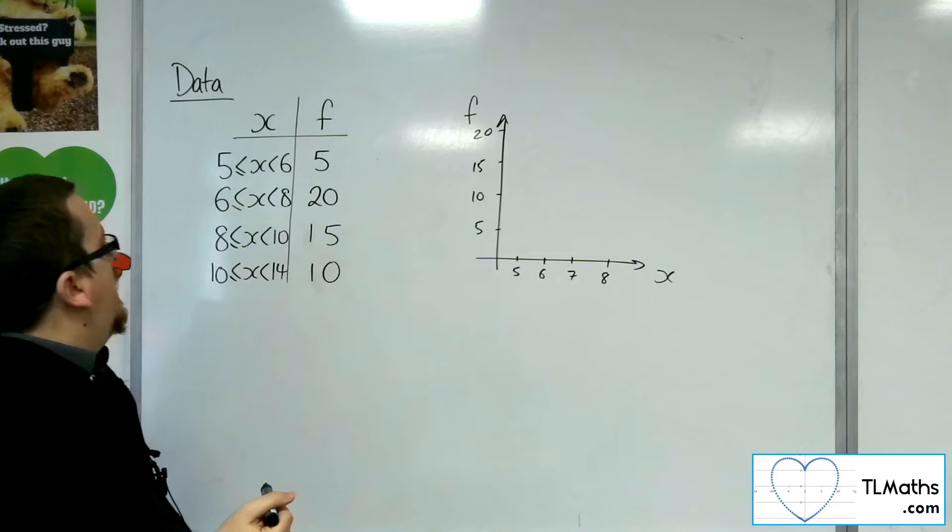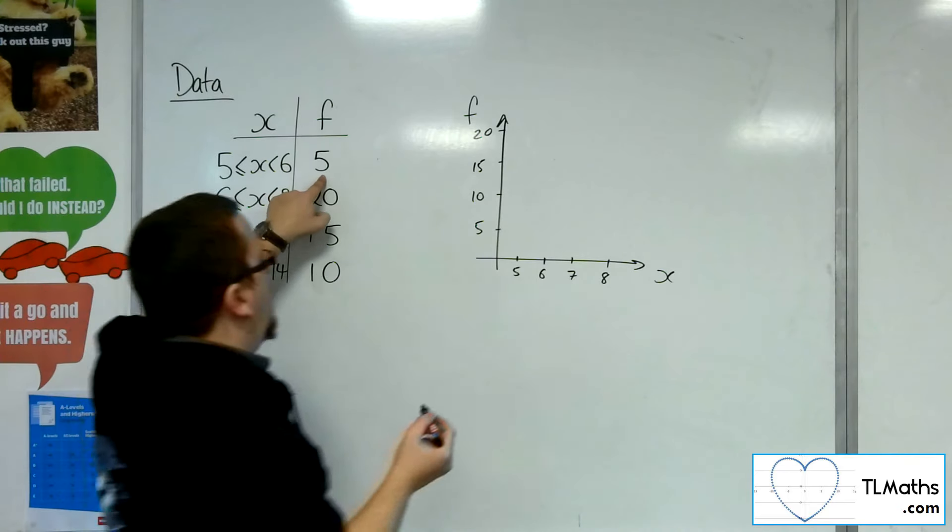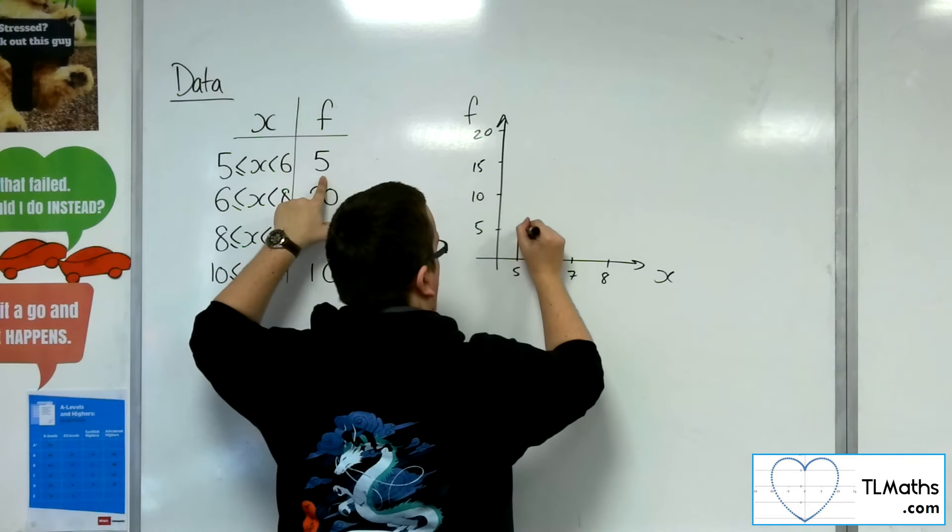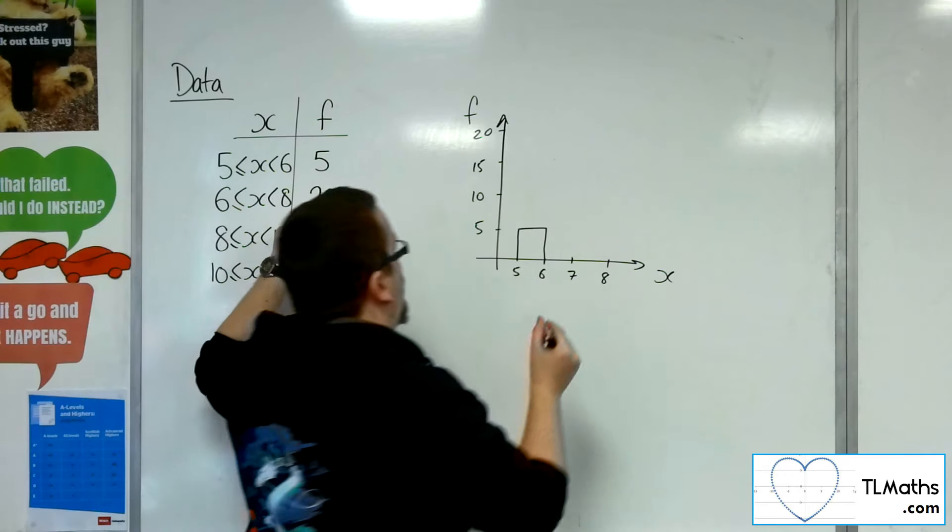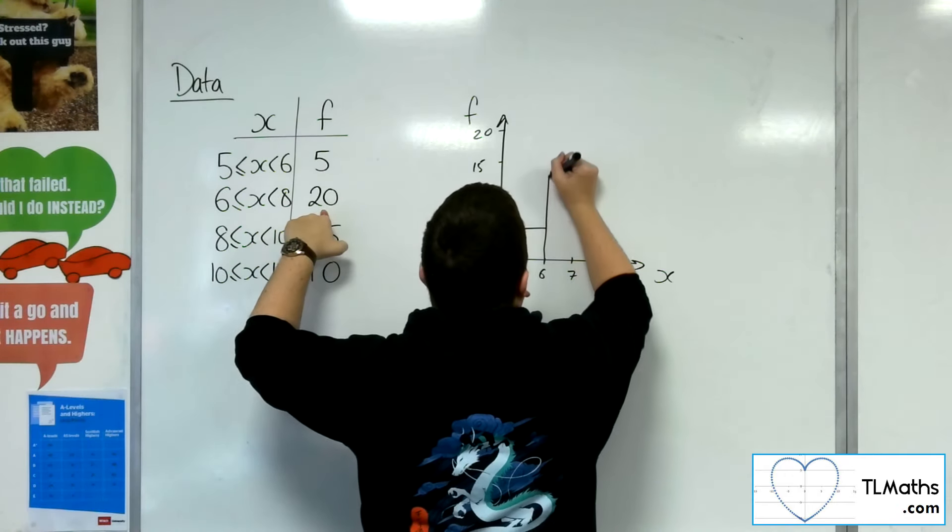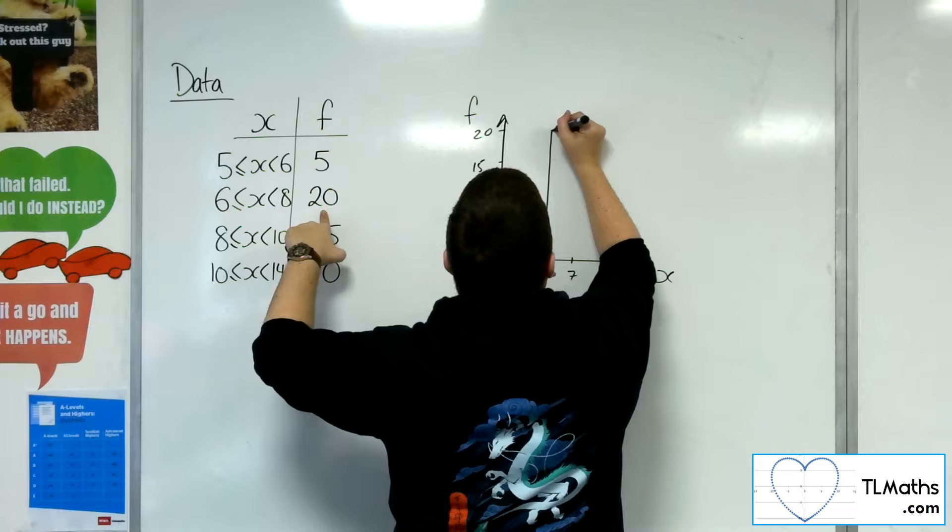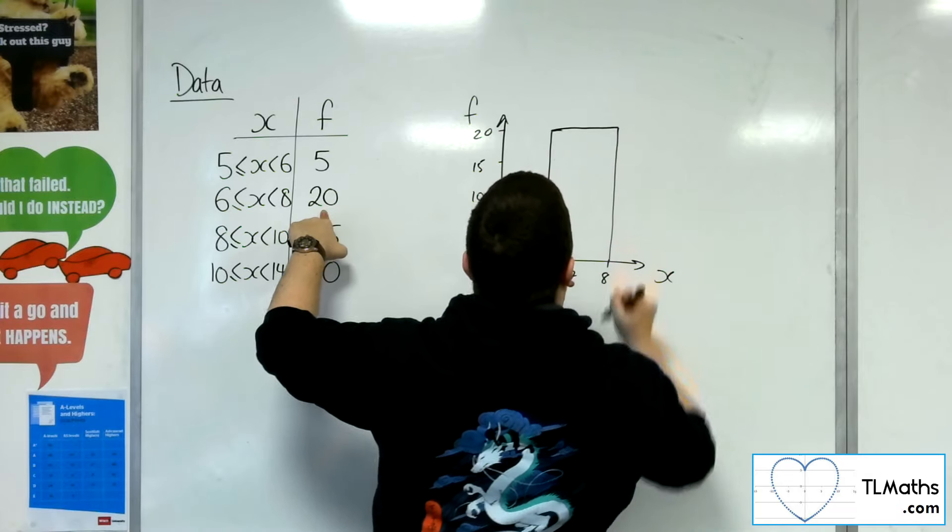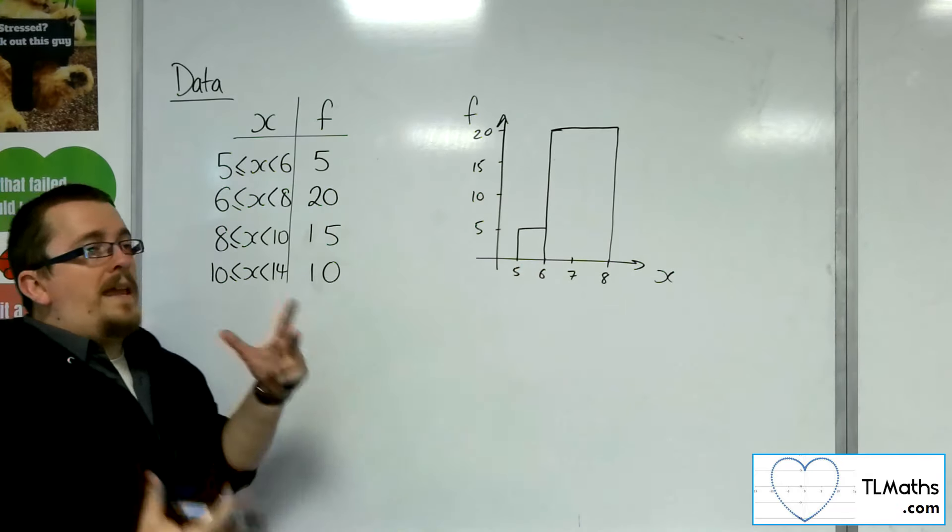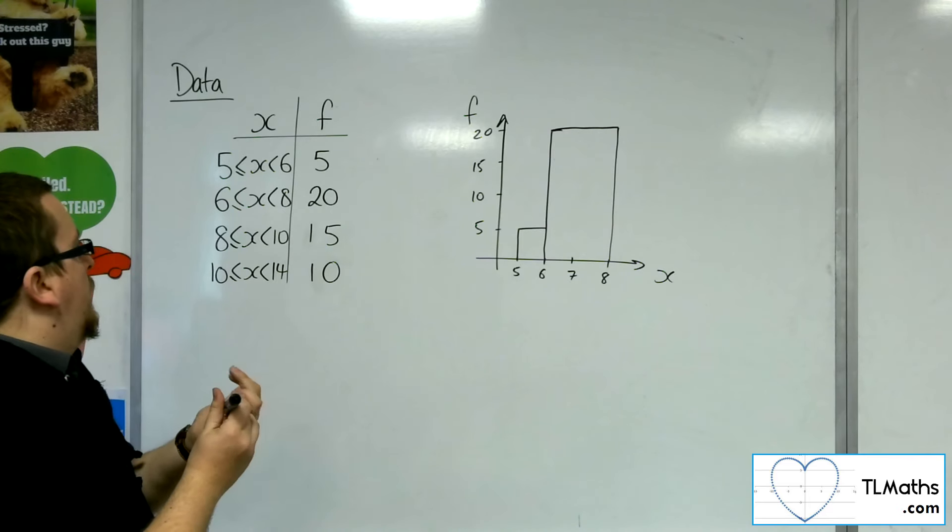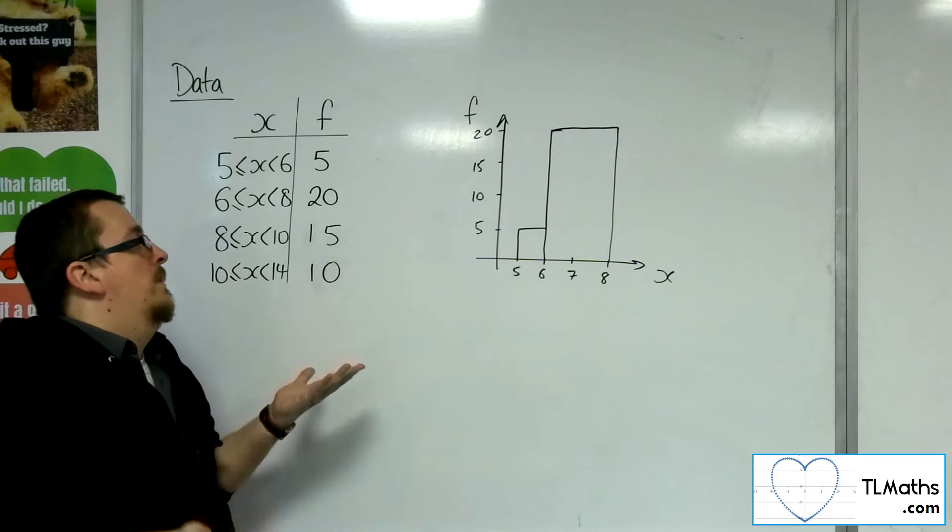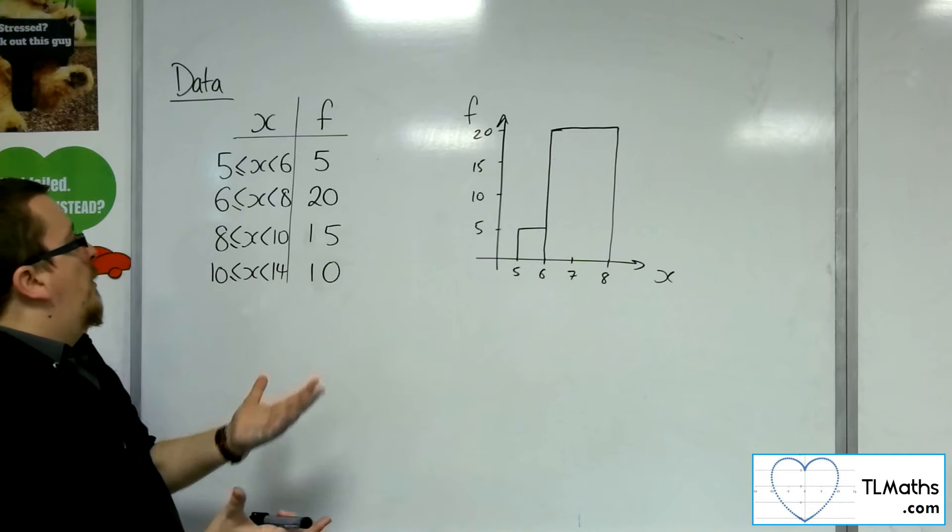Then if you went straight in and went 5 to 6, it's 5, so there's 5 to 6, and 6 to 8 is 20. So it looks like that. So that would be how you would plot it if you were plotting it against the frequency like that, which might be your intuitive way in.